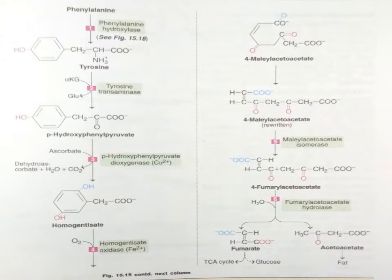The benzene ring cleavage takes place and we get 4-maleylacetoacetate. This undergoes isomerization by the enzyme isomerase to produce 4-fumarylacetoacetate — the COH group moves from the right side to the left side. Then hydrolysis by hydrolase causes cleavage, producing fumarate and acetoacetate. Fumarate enters the TCA cycle and is a precursor for gluconeogenesis; acetoacetate is used for fat synthesis.